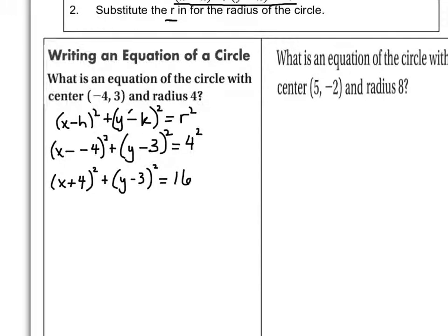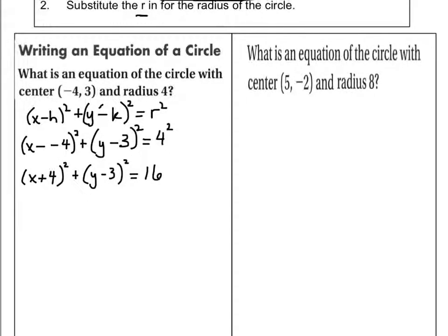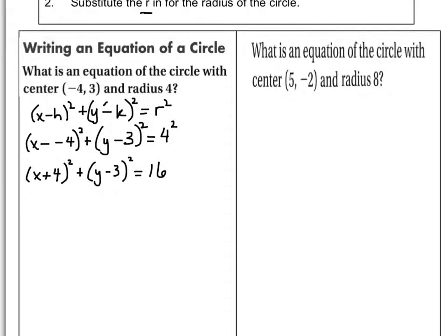So let's take a look at the second one. What's the equation of the circle with the center of 5, negative 2 and a radius of 8? Again, I'm going to put down here standard form of a circle.